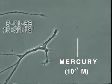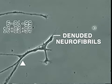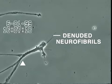Over the next 30 minutes, the neurite membrane underwent rapid degeneration, leaving behind the denuded neurofibrils seen here.